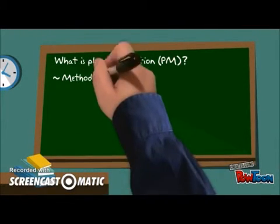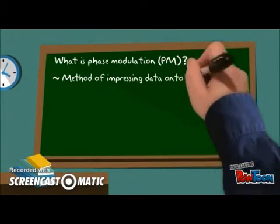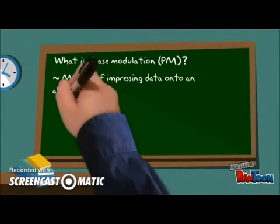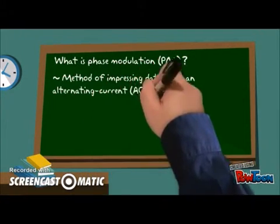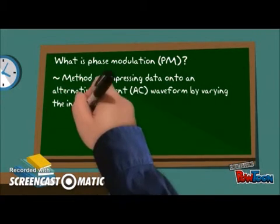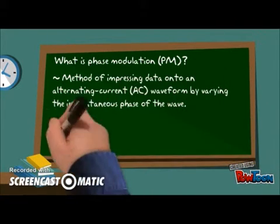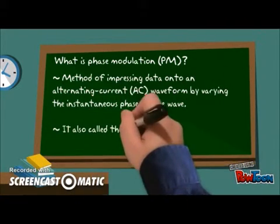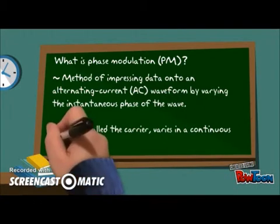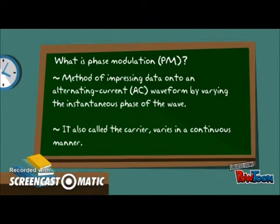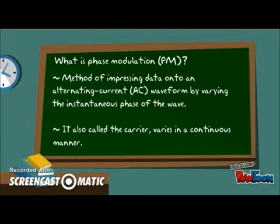Phase modulation, or PM, is a method of impressing data onto an alternating current AC waveform by varying the instantaneous phase of the wave, also called the carrier. It varies in a continuous manner, and thus there are infinitely many possible carrier phase states.